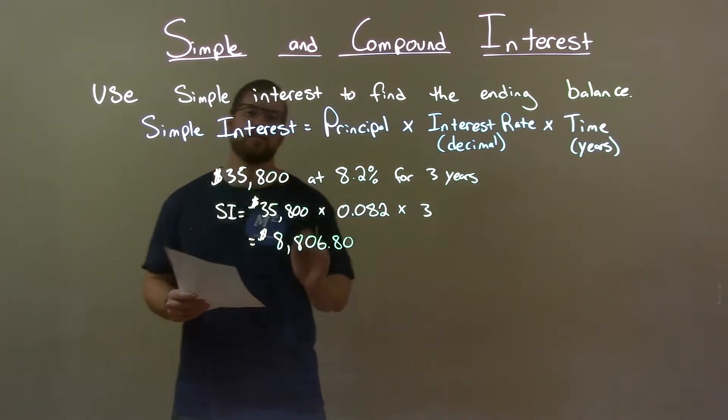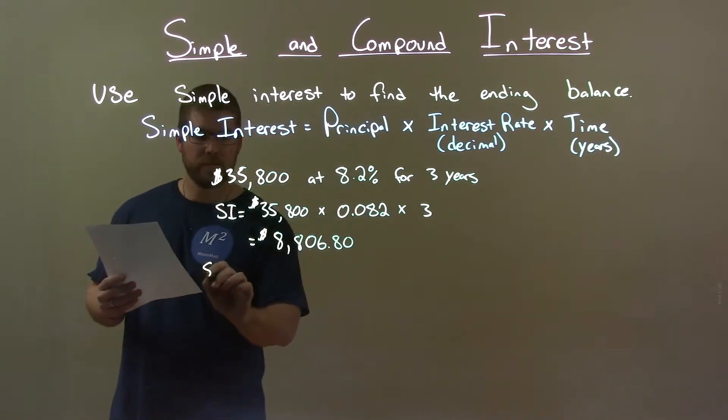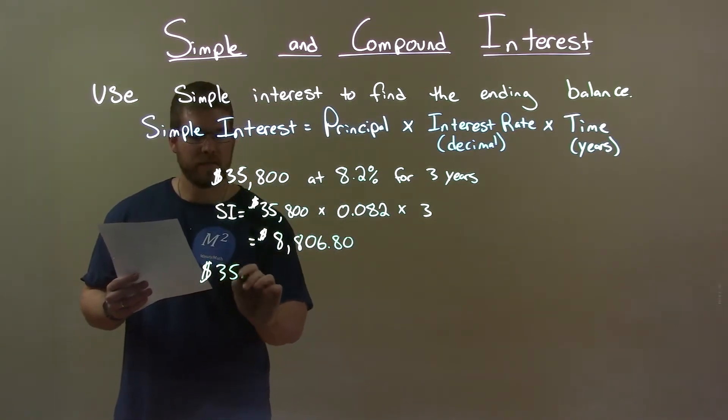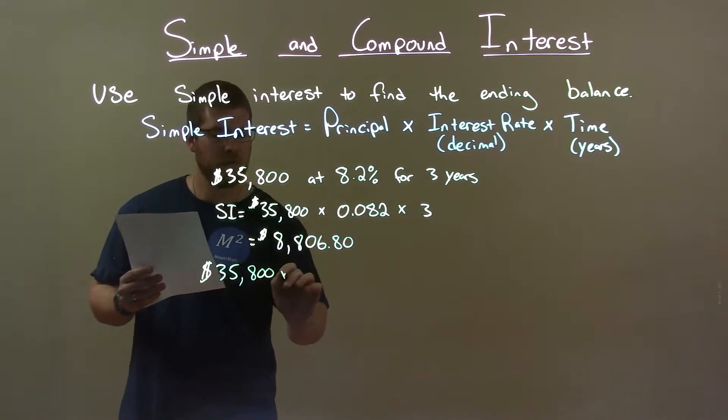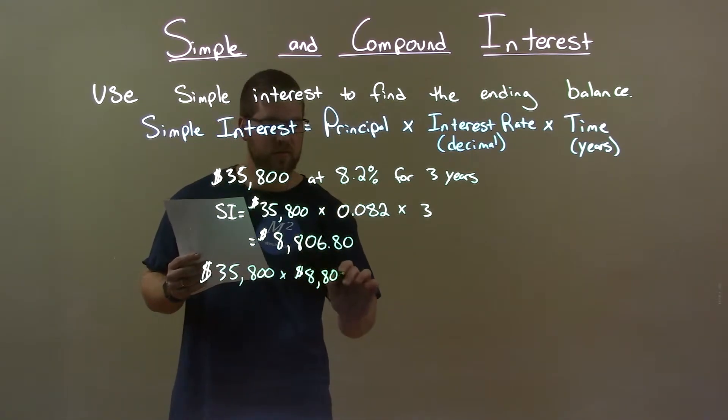Now that is just the simple interest. We need to add that to the principal to find the ending balance. So our principal $35,800 plus our simple interest $8,806.80.